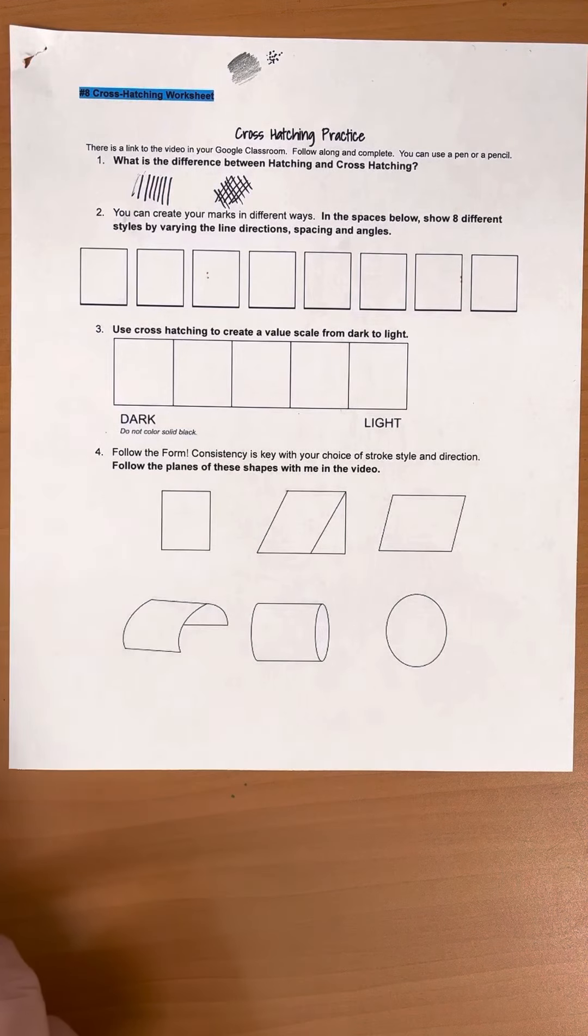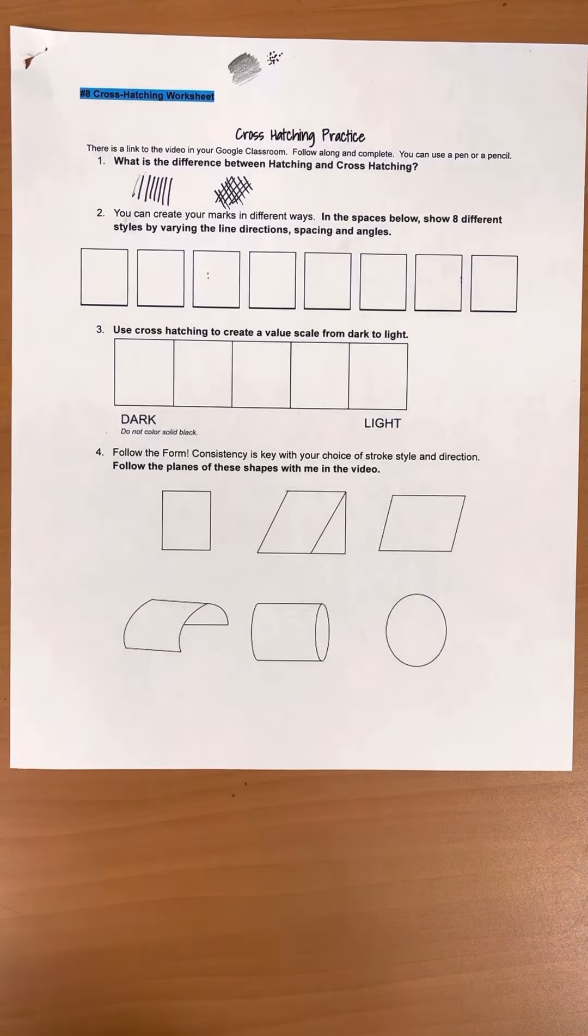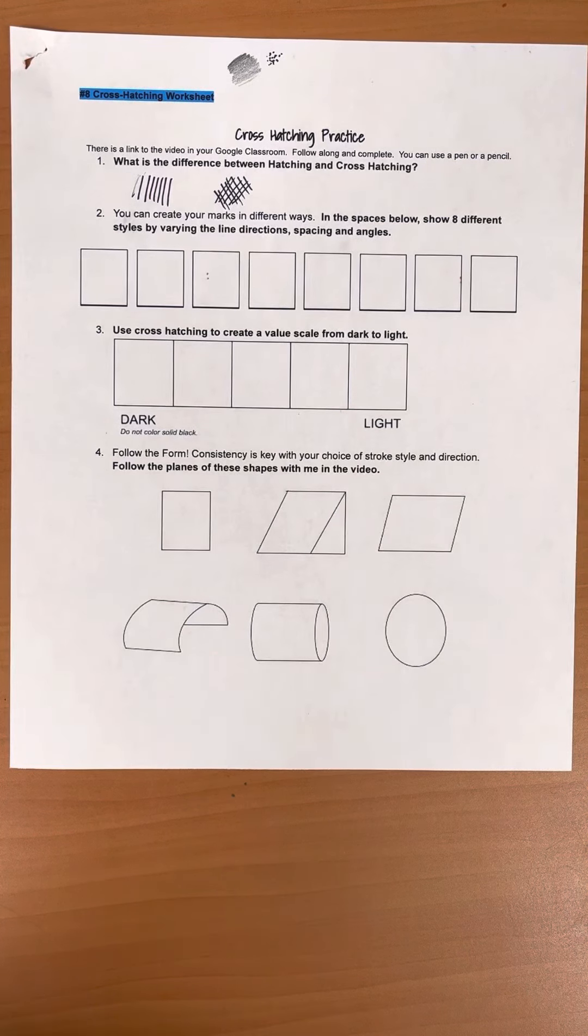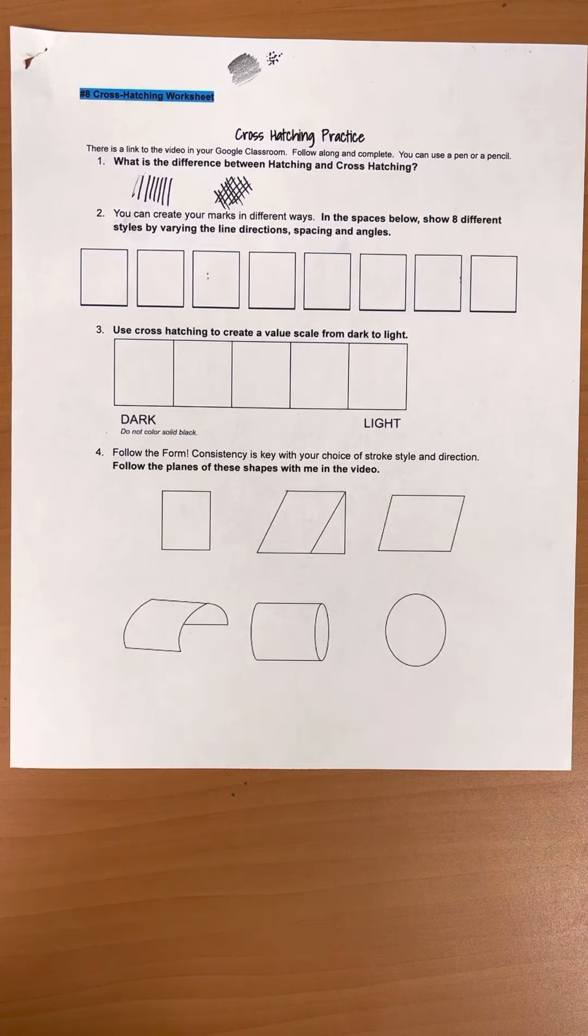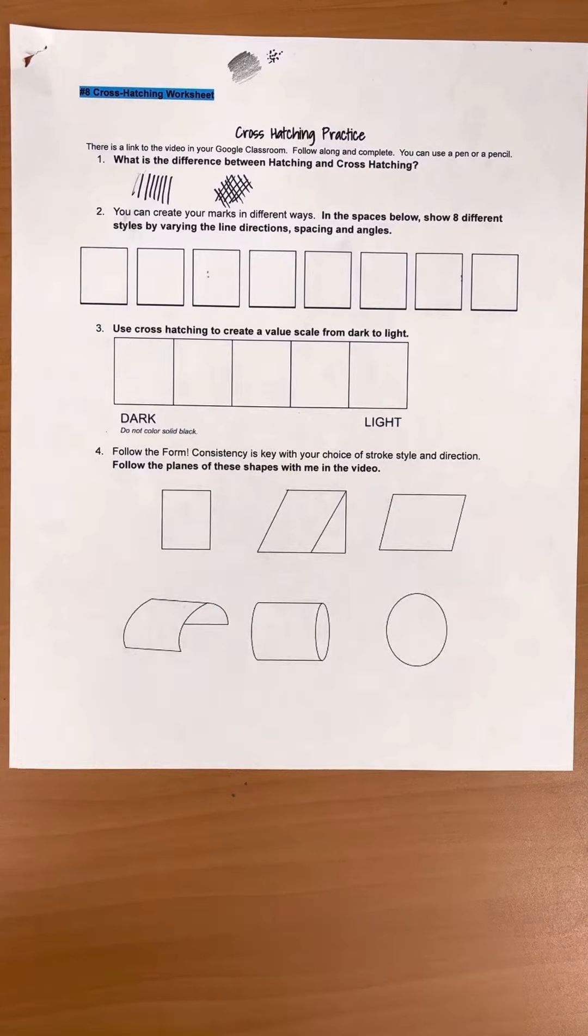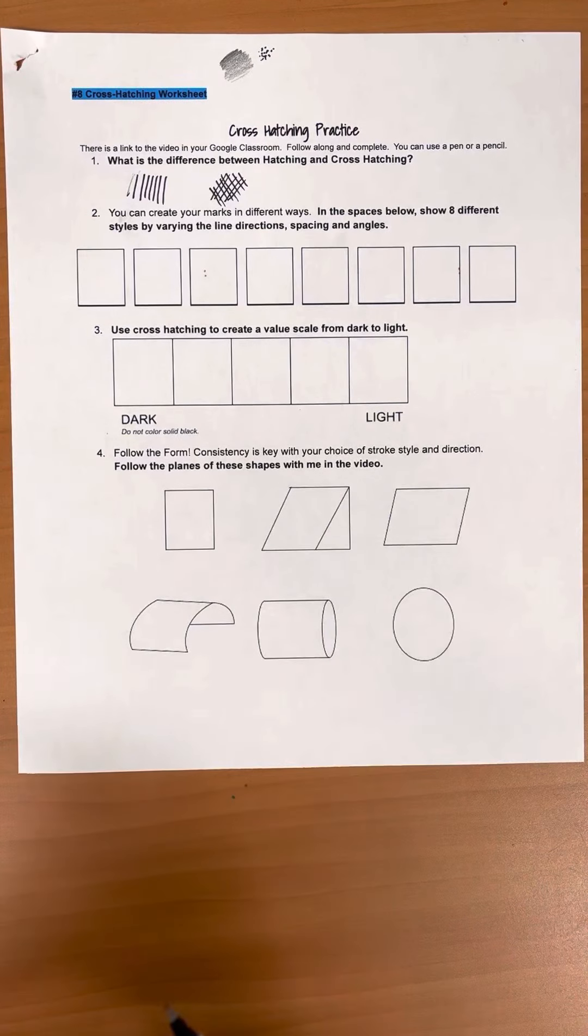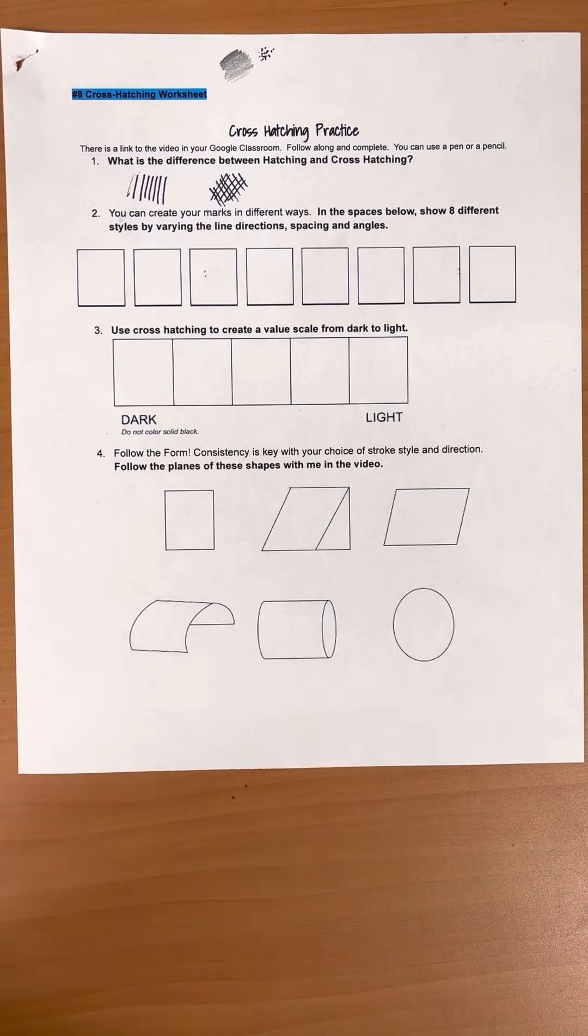Now you can create your marks in different ways, and the ways that you place your marks will create different areas of value and also different textures. You can change your angles. You can create your strokes either vertically or horizontally or diagonal from left to right, or from right to left, or from top to bottom. You can make short strokes or long strokes, and all of those create different looks or might remind you of different textures.